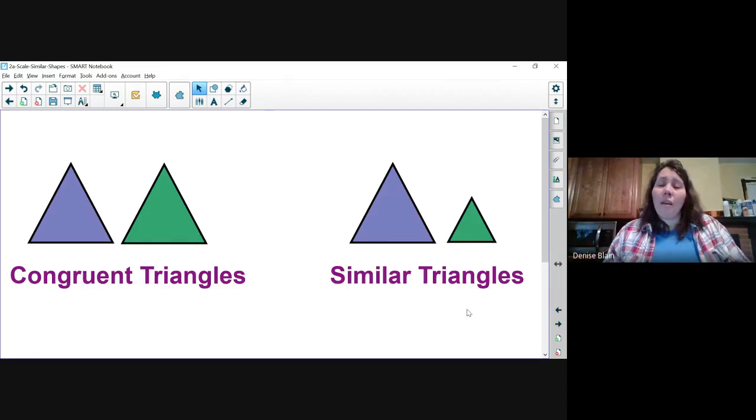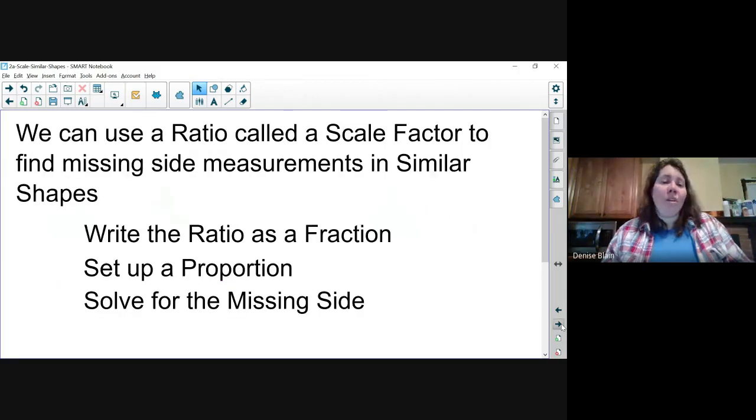They are the same size. Here we have a pair of similar triangles. They are proportionate in size. We can use a ratio called a scale factor to find missing side measurements in similar shapes.